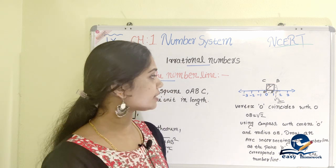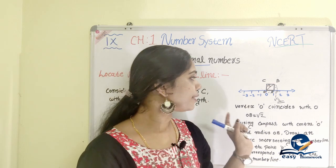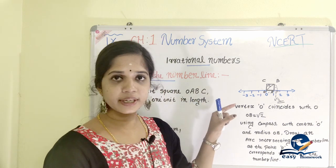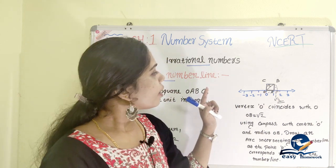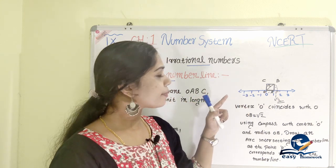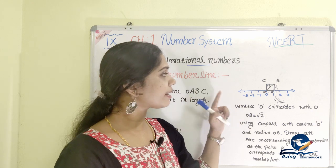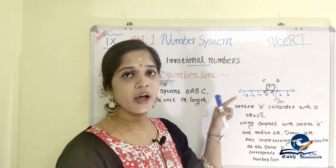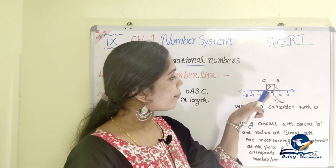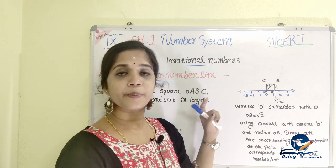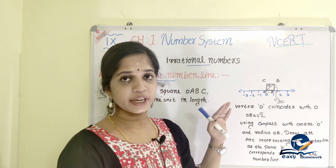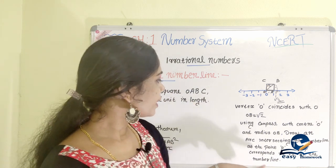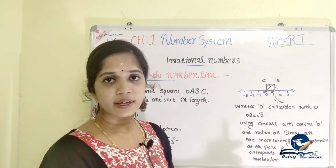We will mark root 2 on the number line. We consider the square O, A, B, C on the number line. Then we locate root 2. Using the arc, we find the intersection point. The point P corresponds to root 2 on the number line.